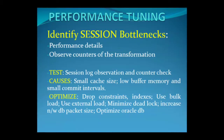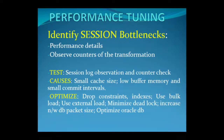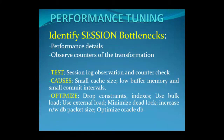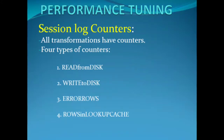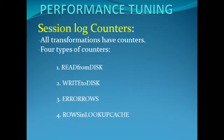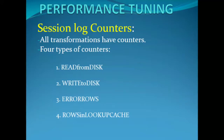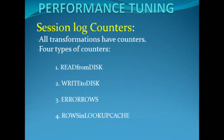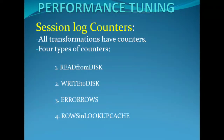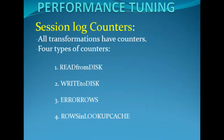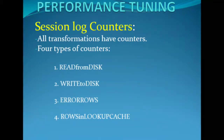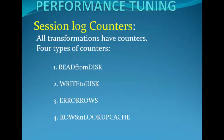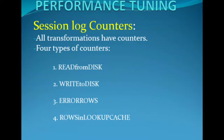Each transformation tracks input rows, output rows, and error rows for each session. Some transformations also have additional performance counters. For sessions containing Aggregator, Rank, or Joiner transformations, examine each transformation's 'read from disk' and 'write to disk' counters. To view session performance details while the session runs, right-click the session in Workflow Monitor, choose Properties, and click the Properties tab. If these counters display any number other than zero, improve session performance by increasing cache sizes. The Integration Service uses an index cache to store group information and a data cache to store transformation data — you will most likely need to increase data cache size more than index cache size.